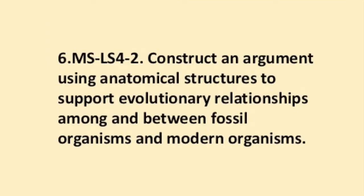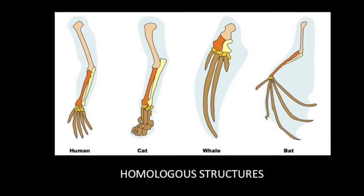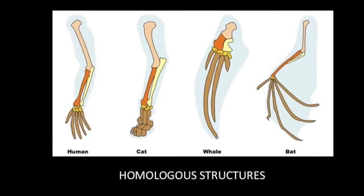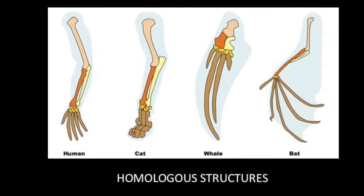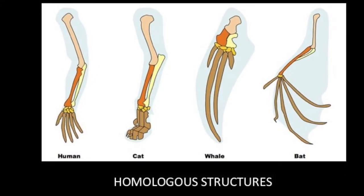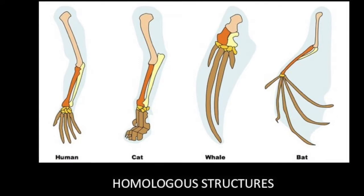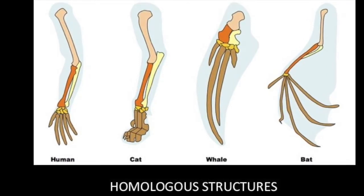6.MS-LS4-2, construct an argument using anatomical structures to support the evolutionary relationships among and between fossil organisms and modern organisms. This picture shows you an example of something we've known as homologous structures. Take a look at the arm and hand of the human on the left. You'll notice the same basic bone structure in the cat, the whale, and the bat. This indicated that these organisms have a common ancestor and have evolved over time to survive in different habitats.